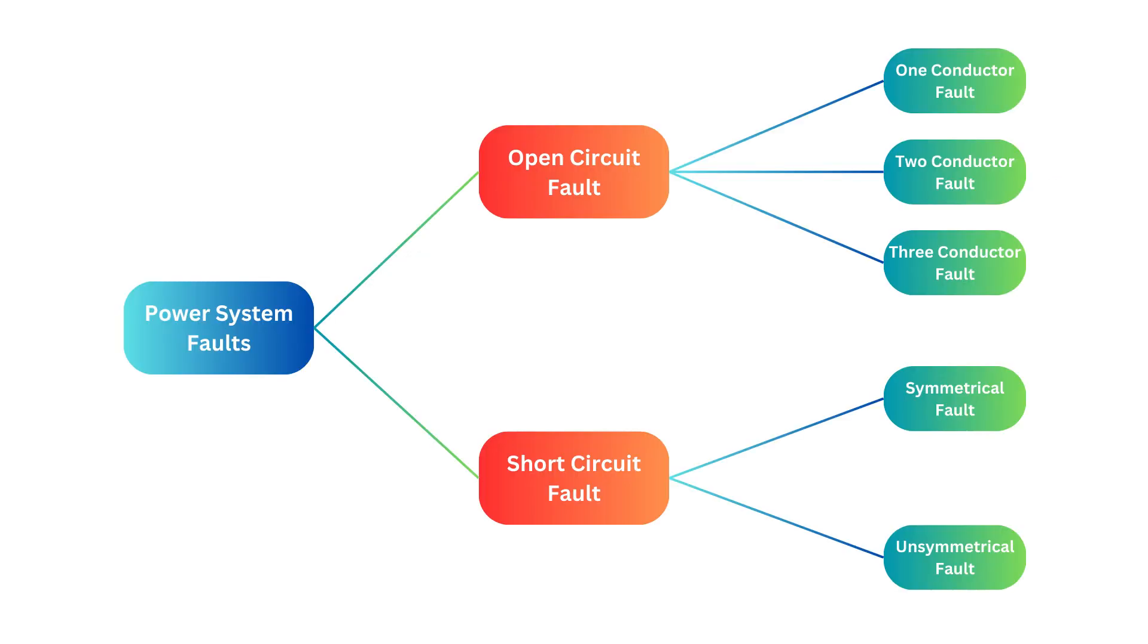A short circuit fault happens when conductors of different phases come into contact with each other, leading to a large current flow in one or more phases. This type of fault is further divided into symmetrical and unsymmetrical faults.